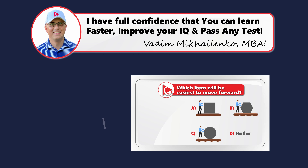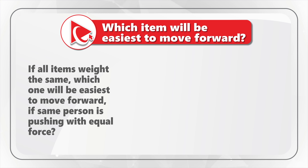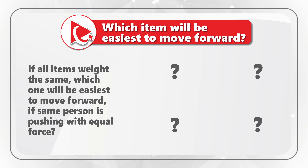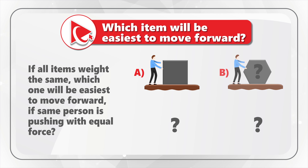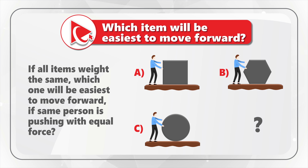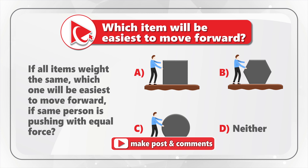Here's an amazing question to test your knowledge of mechanical movement of objects. You are presented with a picture of a person moving an object, and you need to determine — if all objects weigh the same — which one will be easiest to move forward if the same person is pushing with equal force. Select one out of four possible choices: Choice A — person moving a cube; Choice B — person moving a hexagon; Choice C — person moving a ball; or neither one. Take a close look. I'm moving forward to share my version of the solution.